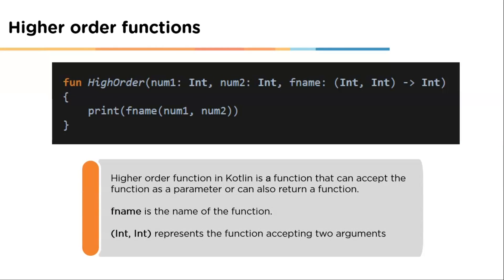The next topic is higher order functions. A higher order function in Kotlin is a function that can accept other functions as a parameter and can also return a function. We've heard that functions accept variables, but in higher order functions, they can accept other functions as well. As seen in the example, the function 'highOrder' accepts two integer values — num1 and num2 — and a function named fname, which accepts two integers and returns an int. Inside the function body we call fname and print its result.